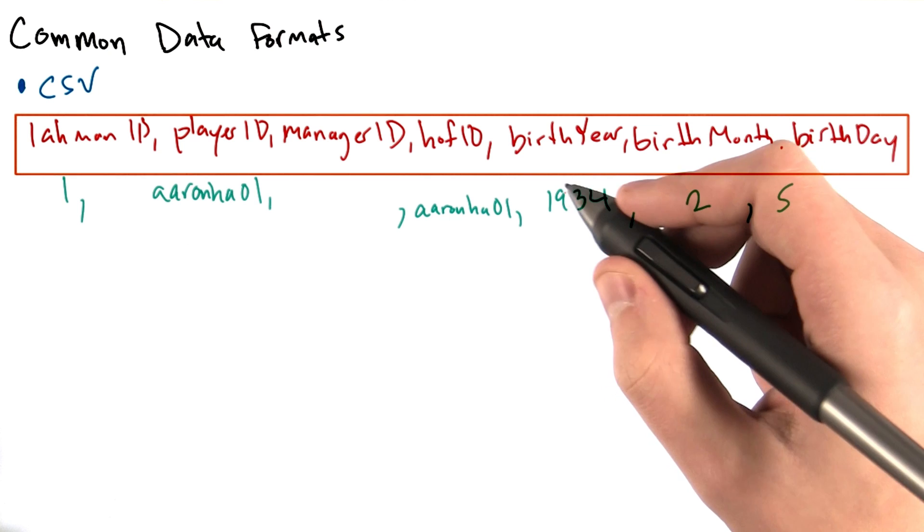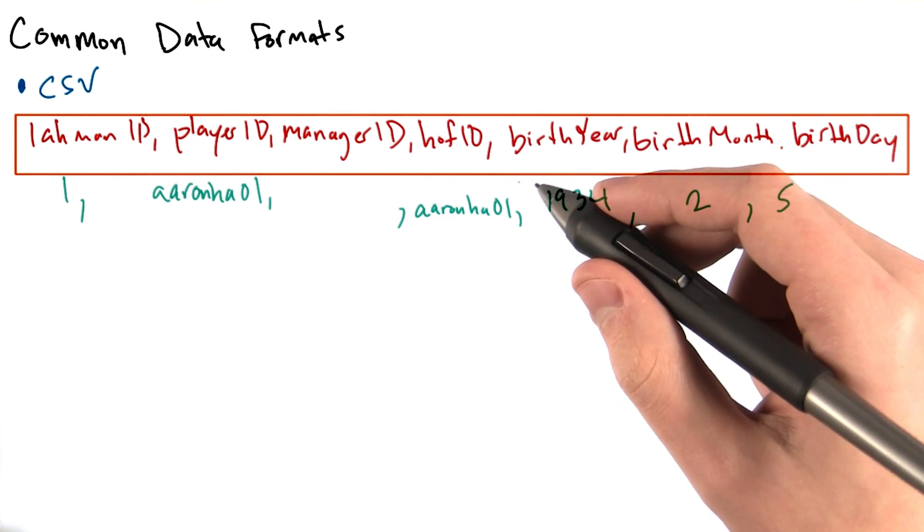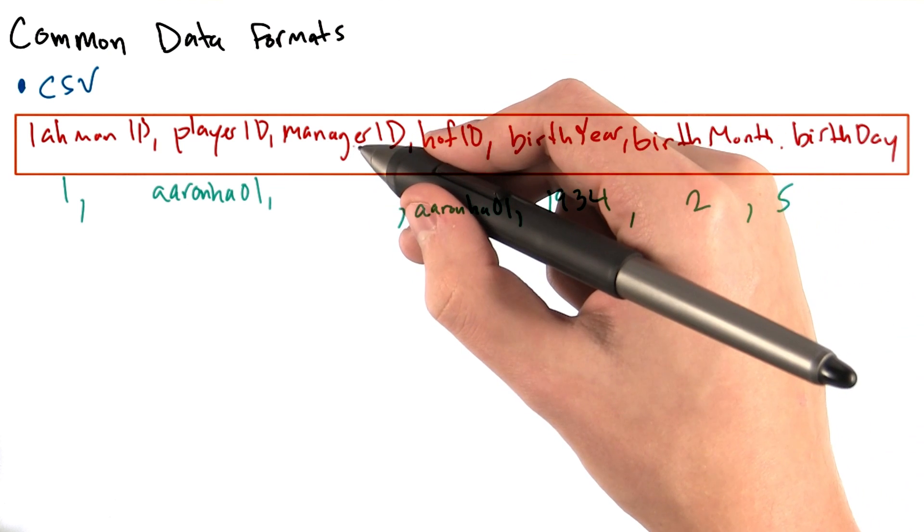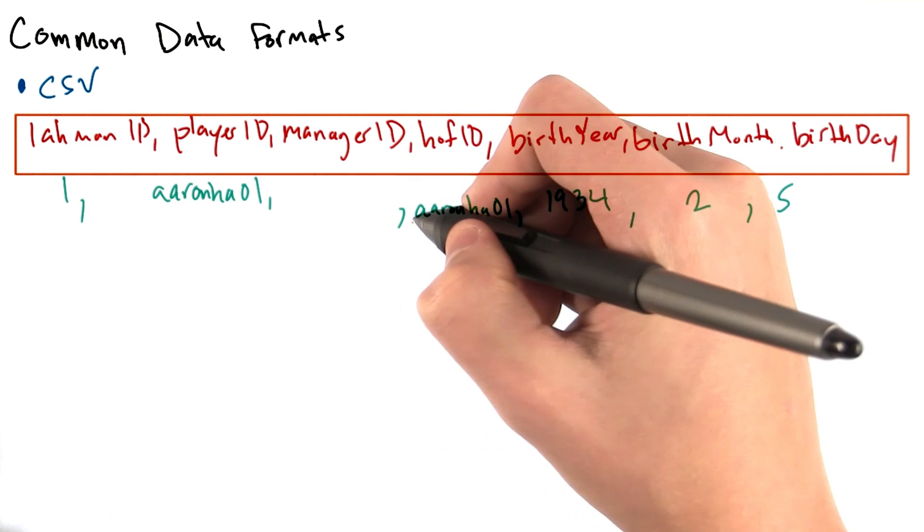Note that if a particular player doesn't have a value for one field, for example, Hank Aaron does not have a manager ID, we simply see two commas in a row.